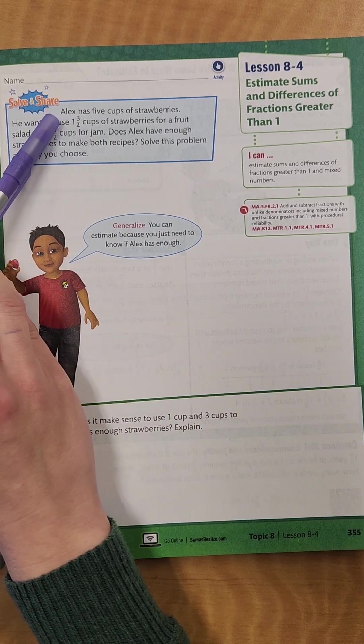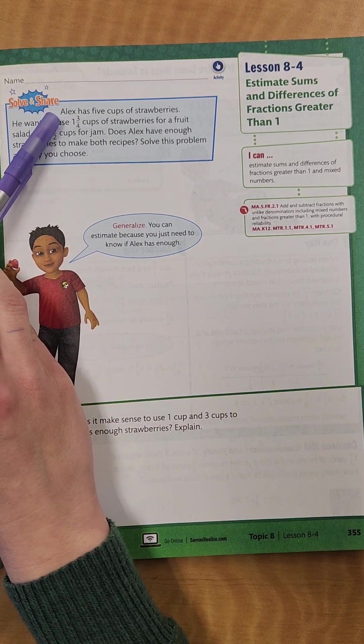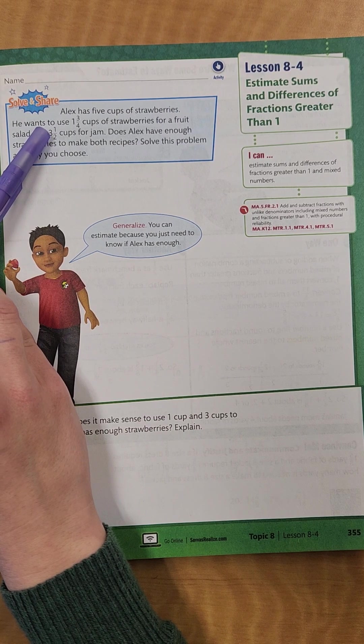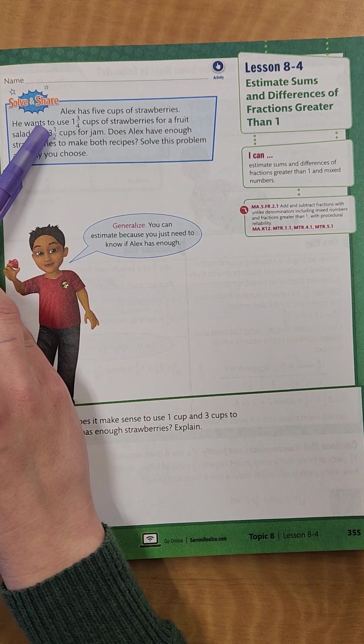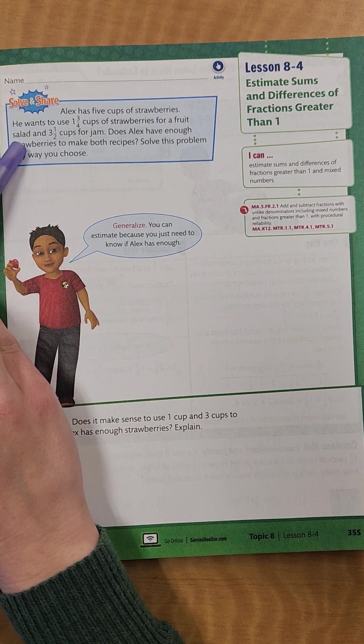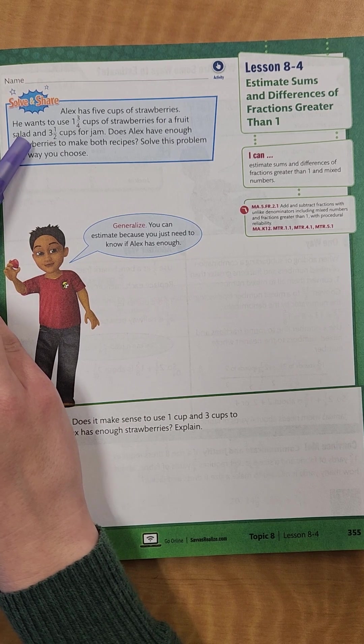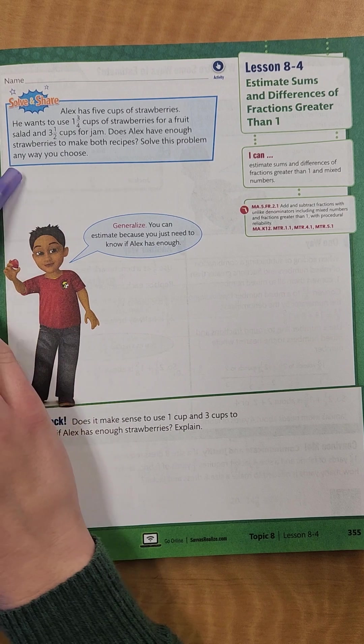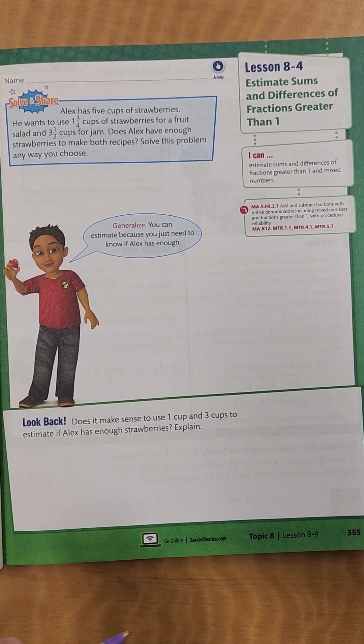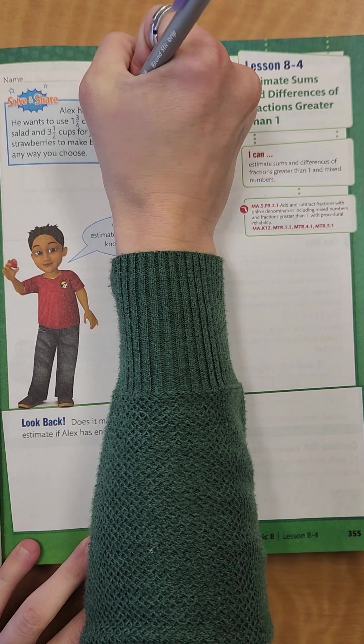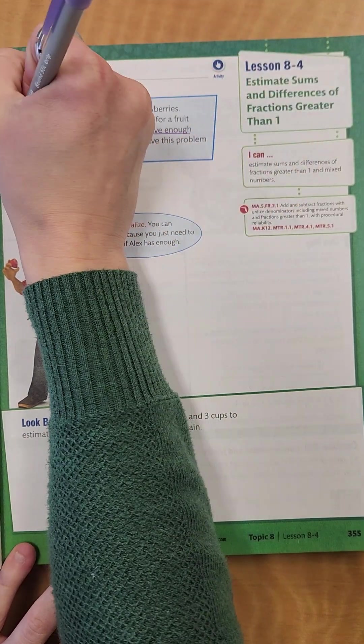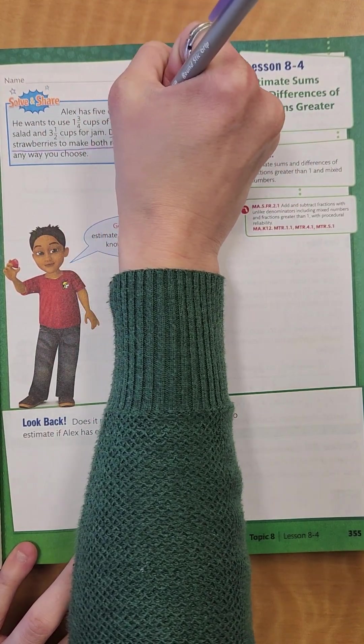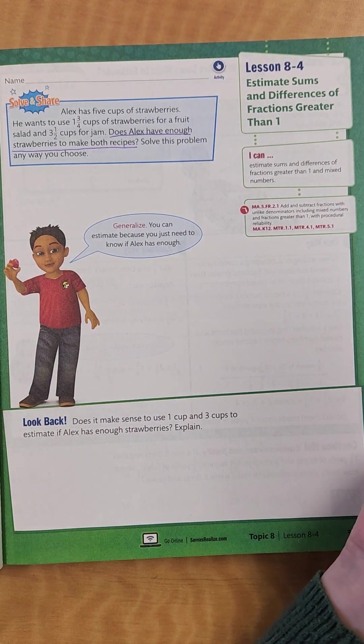So let's look at this first problem. It says, Alex has 5 cups of strawberries. He wants to use 1 and 3 fourths cups of strawberries for a fruit salad and 3 and a half cups for jam. Does Alex have enough strawberries to make both recipes? Solve this problem any way you choose. So our question, let's go ahead and underline that. Does Alex have enough strawberries to make both recipes? There's our question.